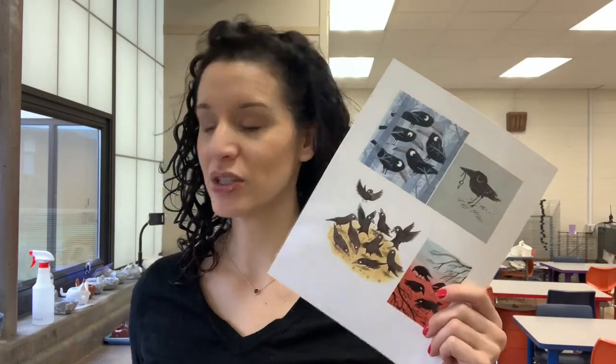Today in art class, we are going to be drawing the super fun character from Wishtree, Bongo the Crow. I know we've just kind of started reading the story in chapter 8, and we see how Bongo likes to collect some things. So I thought it would be fun to paint a picture of Bongo.